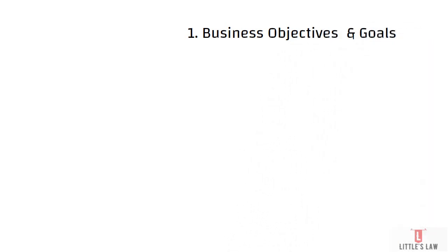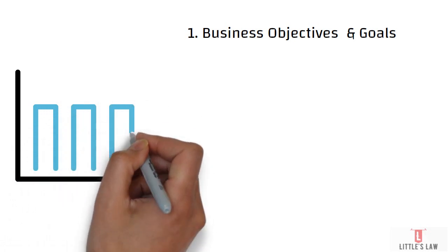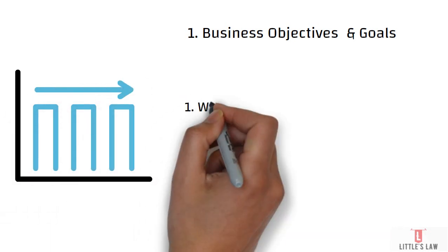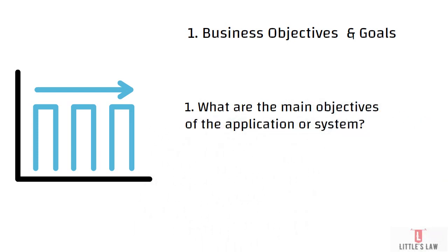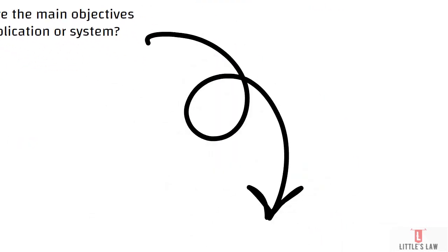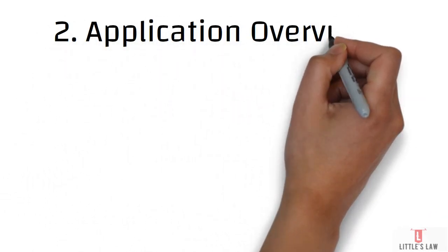Let's start with the very first question, which covers business objectives and goals. The first question is: what are the main objectives of the application or system? You should understand the main objective of the application. You have to either make this part of your questionnaire or ask this question to the business analyst or stakeholder and note down what the main objectives of the application or system are.